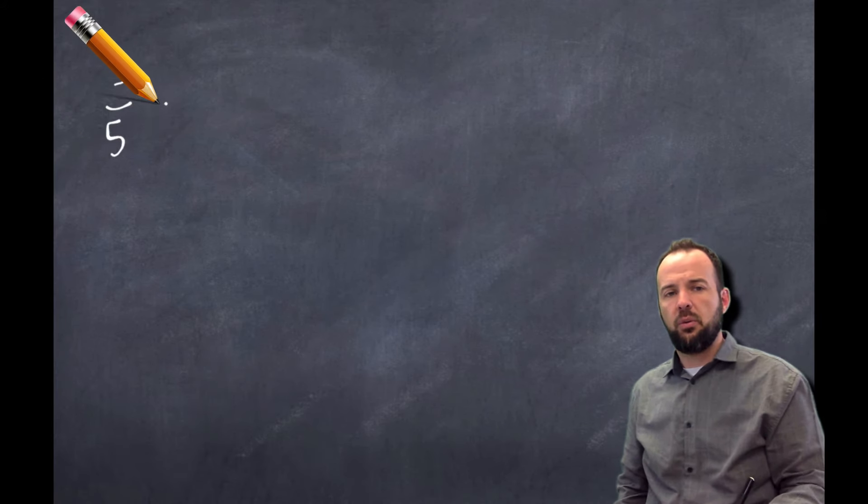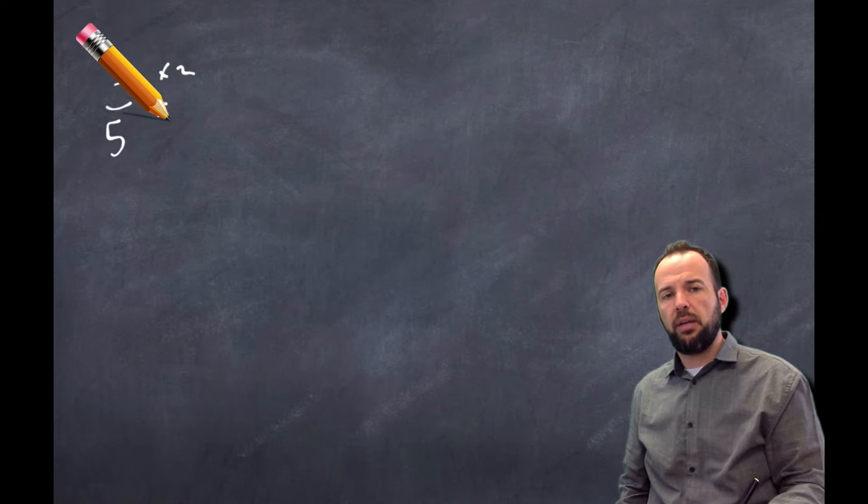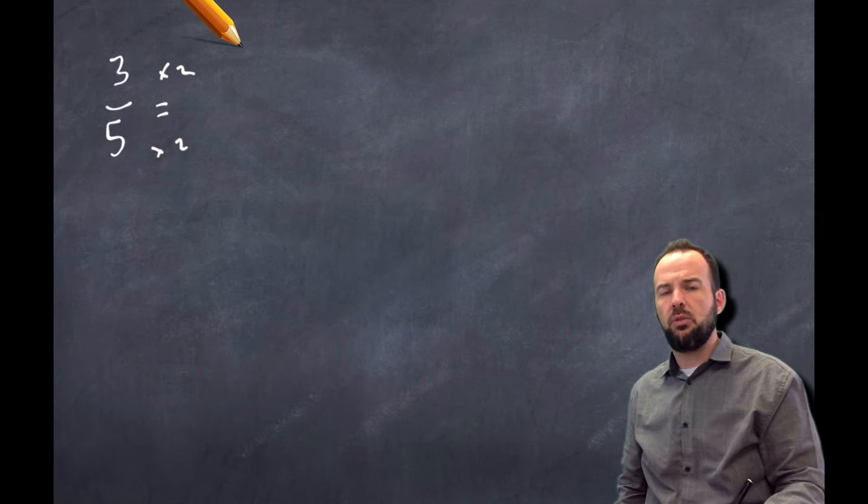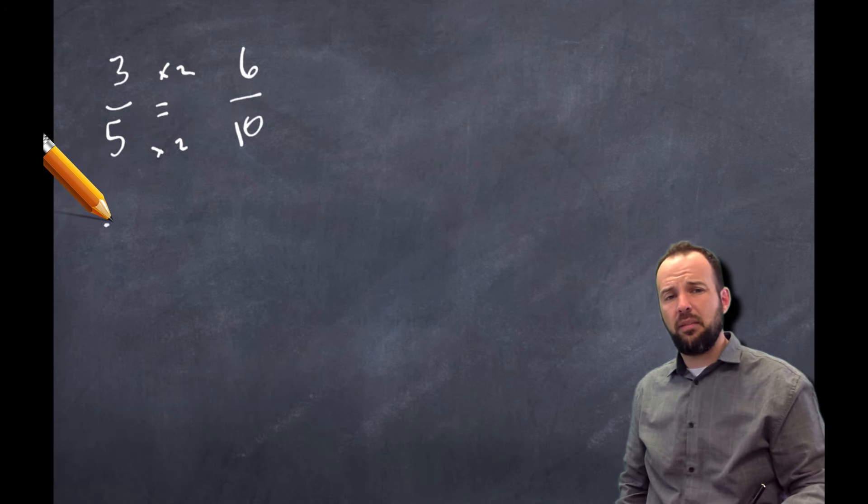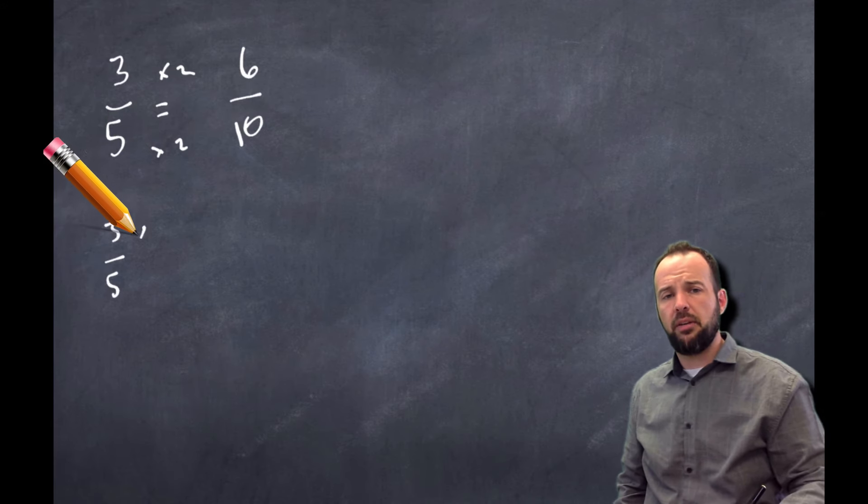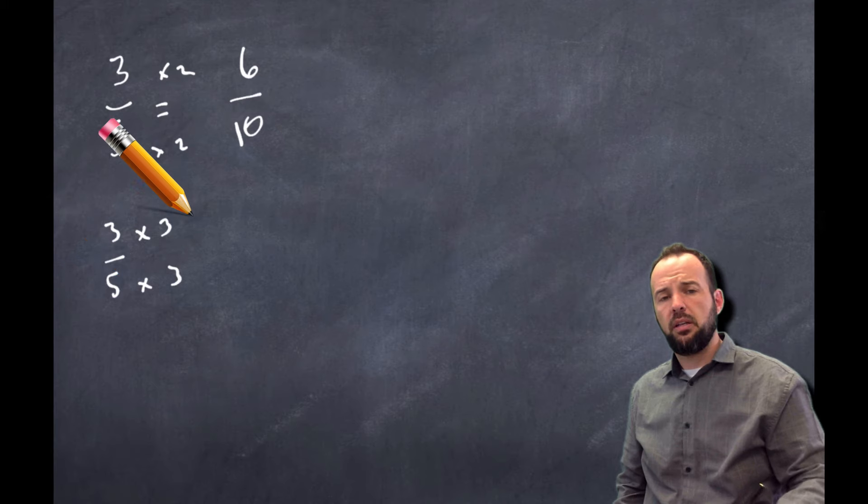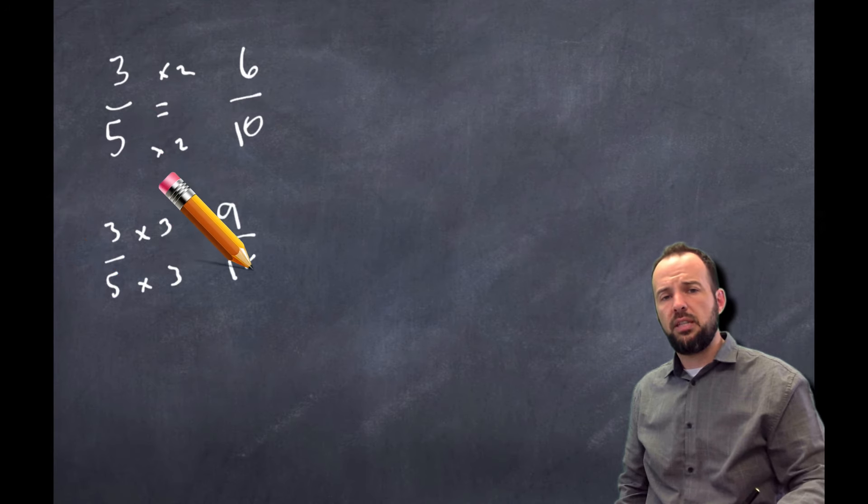All right, awesome. There's a ton of equivalent fractions I can make. If I multiplied my numerator and denominator by 2, I would get 6/10, right? 6/10 looks good. I could multiply my numerator and denominator times 3 to get 9/15.